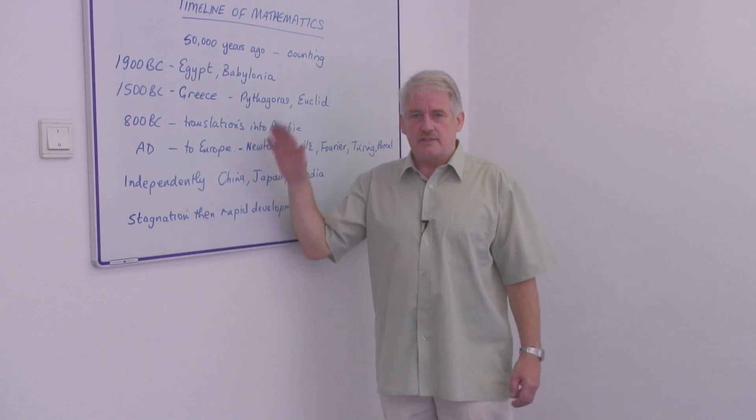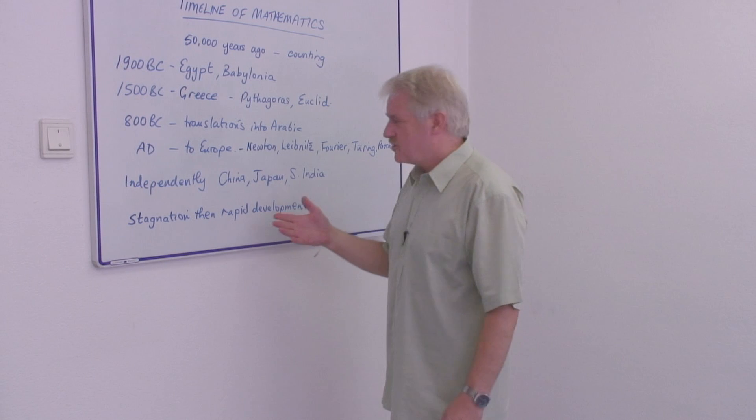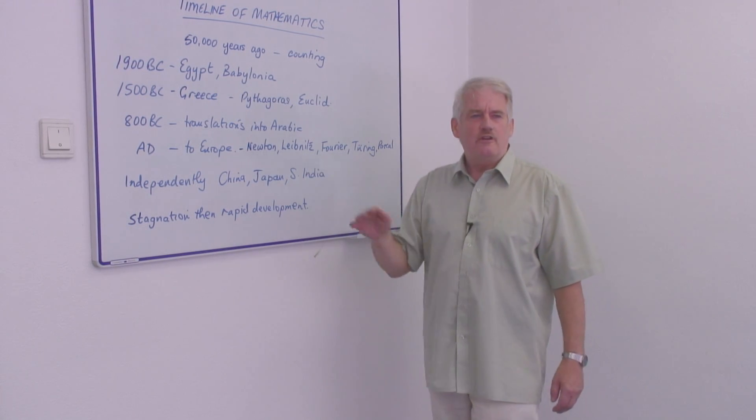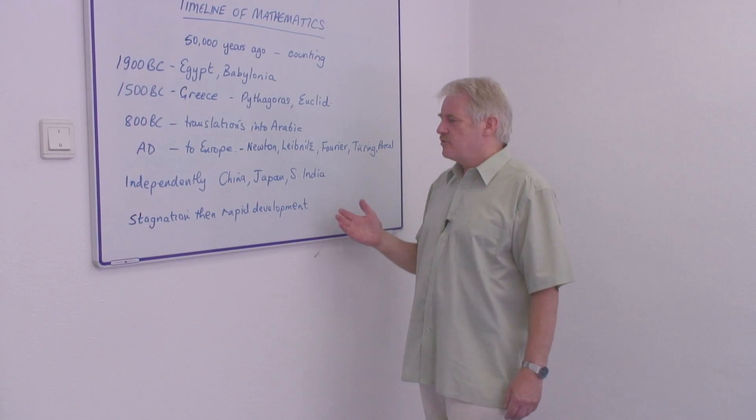Mathematics throughout this timeline has developed not in a uniform way, not in a gradual way, but tended to produce rapid development for a few years, and then complete stagnation for maybe a century or two.